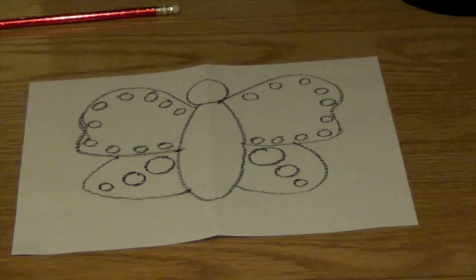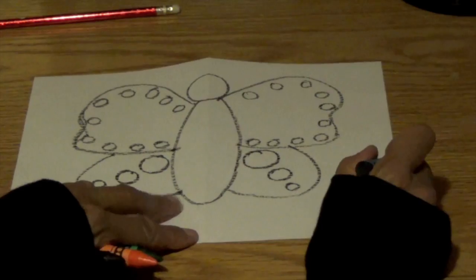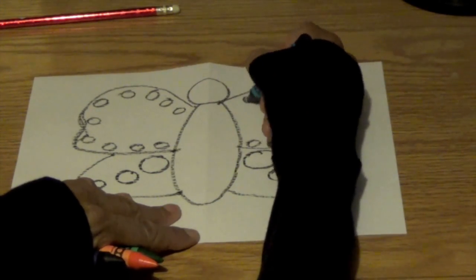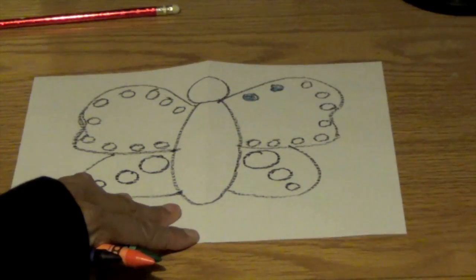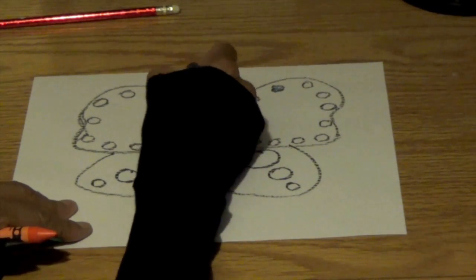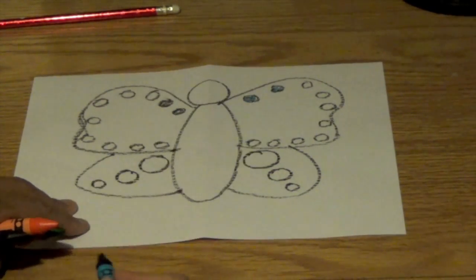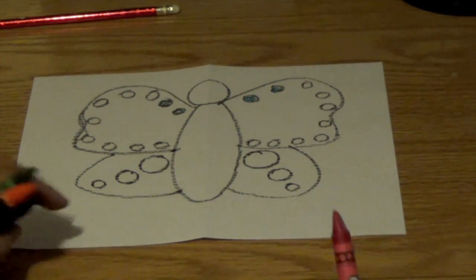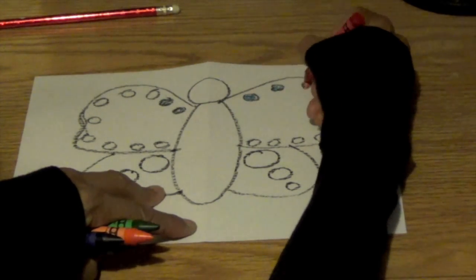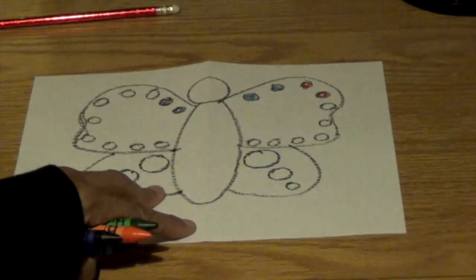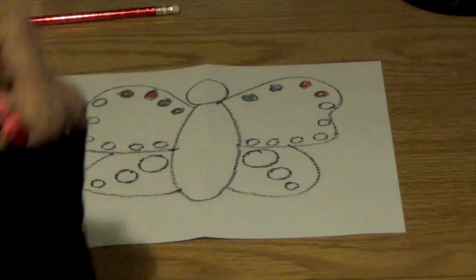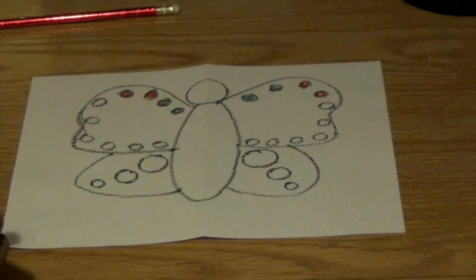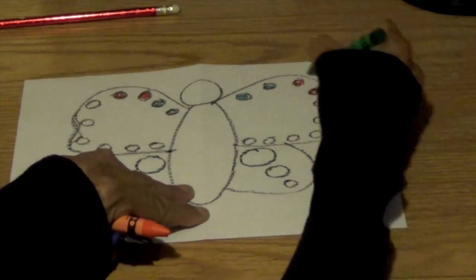So first we're going to start with the blue crayon. We're going to come over to this wing over here and color these two blue. See them? Do these two red. Do these two red. Do you see a pattern, boys and girls? A pattern of colors.